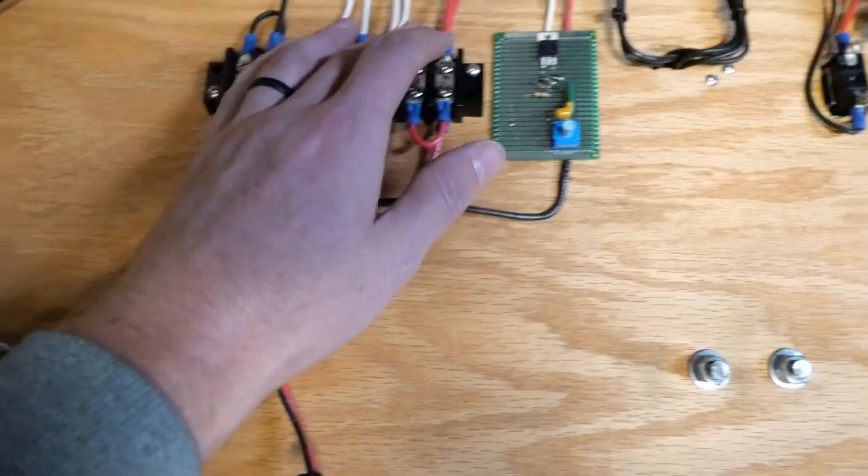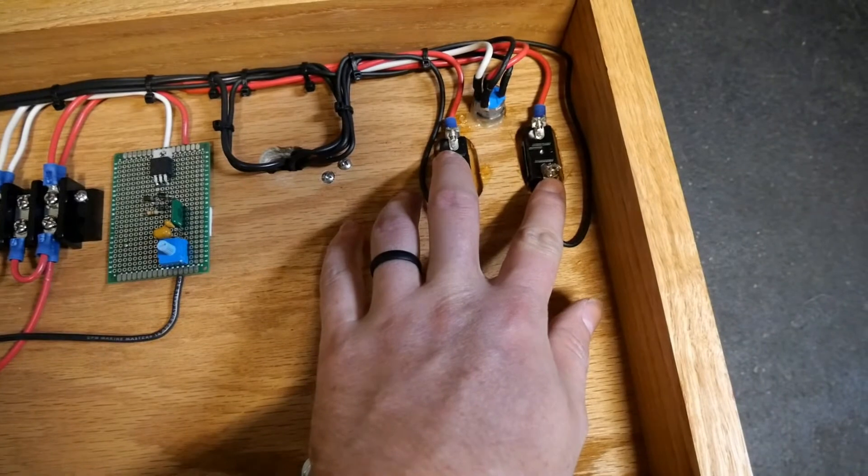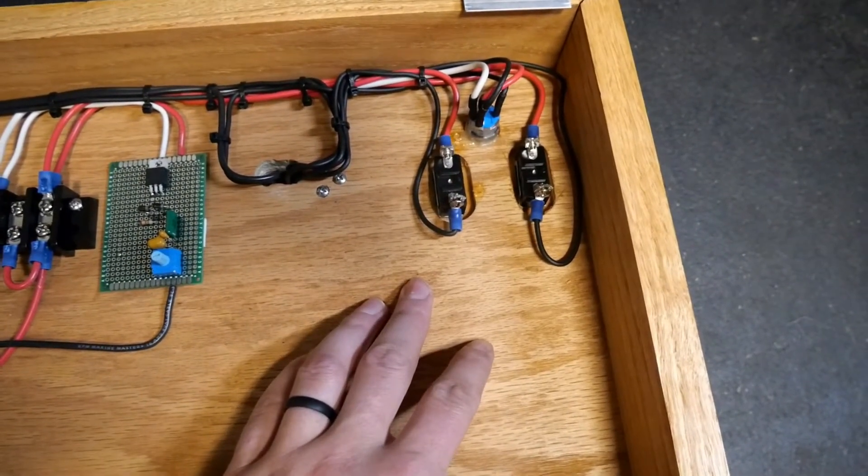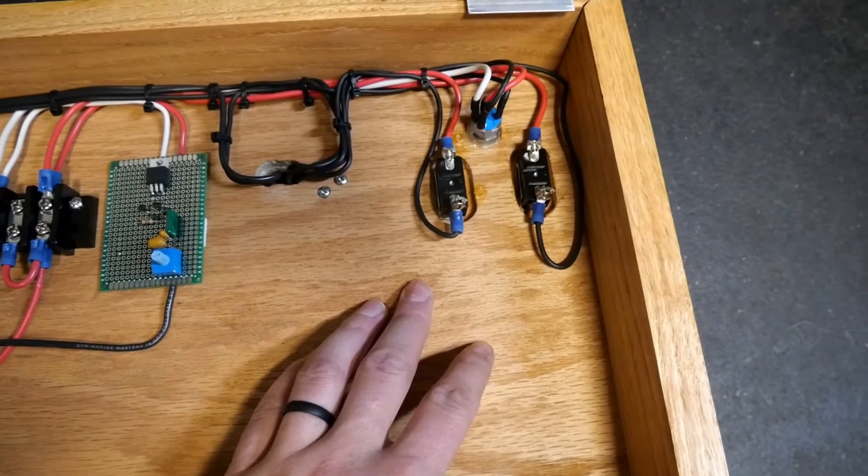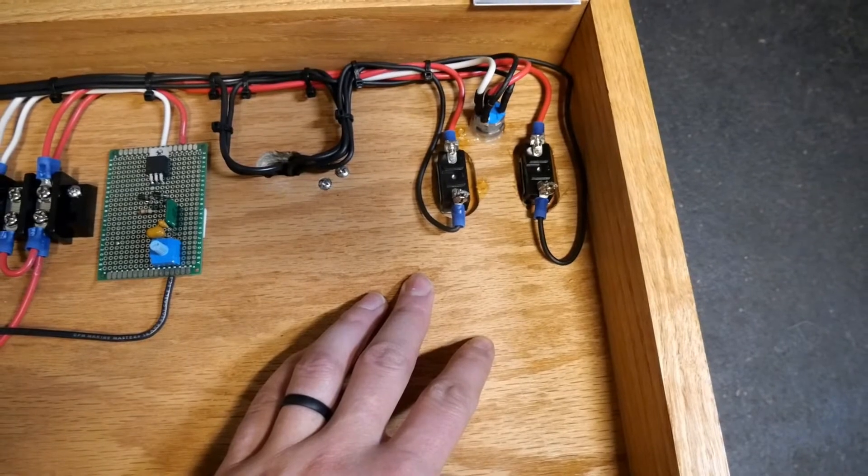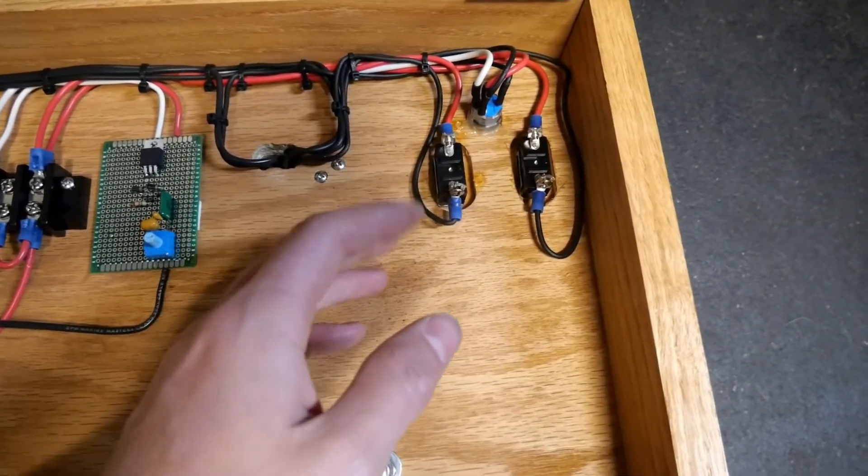And then the 28 volts goes over to these switches. These switches control pins that are on the bomb rack itself, and then these pins allow you to select the type of munition that you want to drop or it can make the bomb null and make it drop so that it doesn't explode.